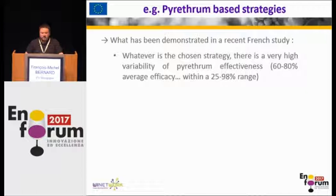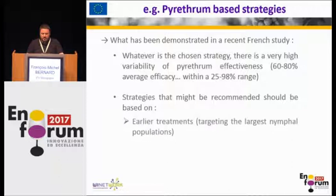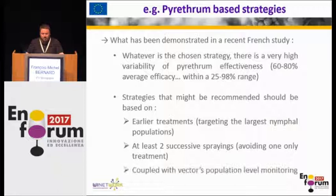In a recent study performed in France, we found that if you use natural pyrethrum, which is allowed in organic viticulture, irrespective of the strategy — one, two, or three treatments applied to the larvae — there is always a huge variability in the effectiveness of natural pyrethrum. On average, it is 60 to 80 percent efficacy, but the range is huge and it changes from year to year and from area to area. A post-treatment control of the population is therefore extremely important.